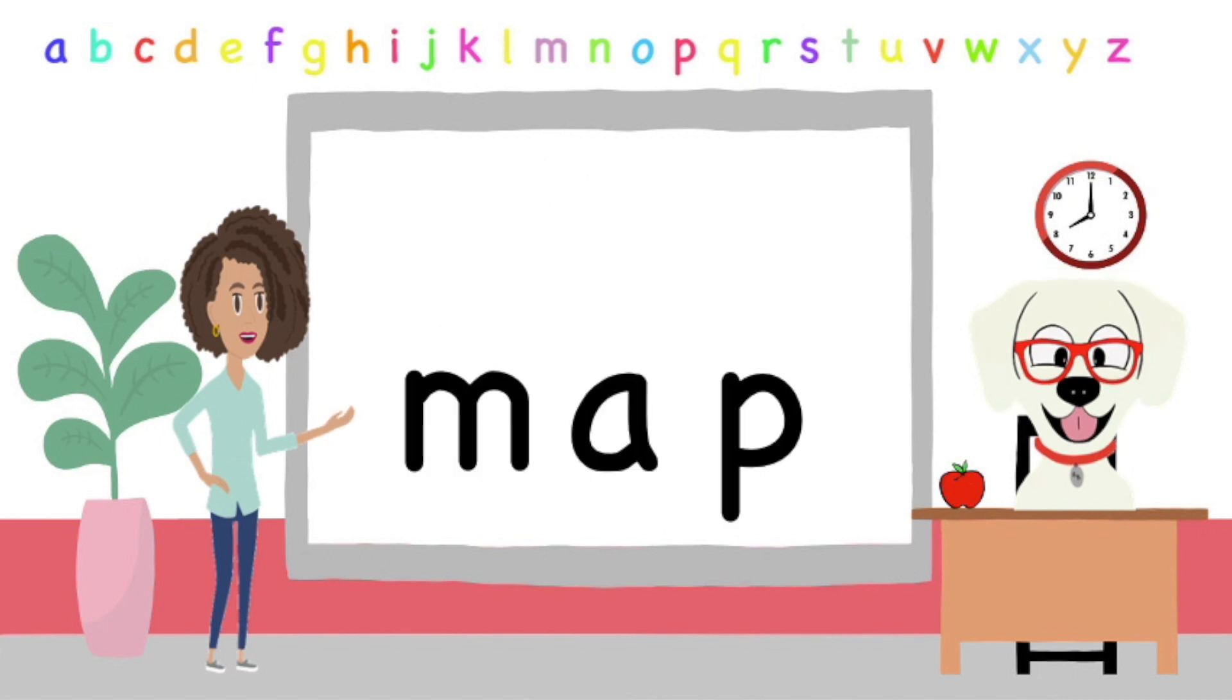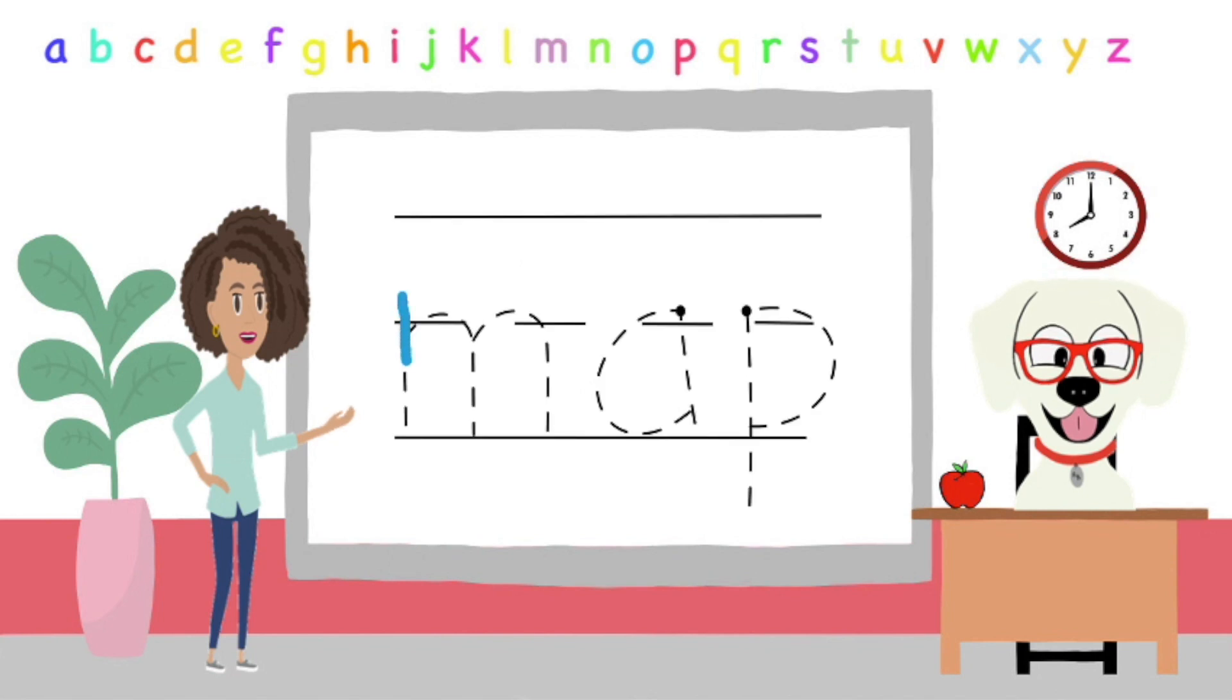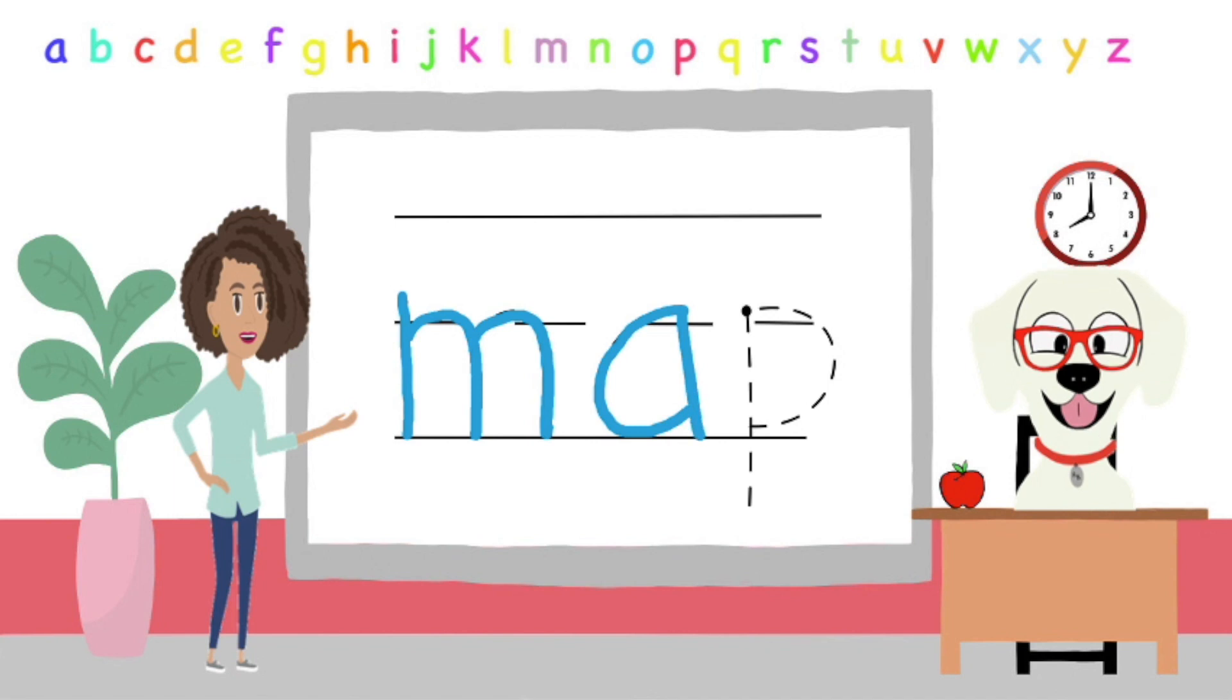For our next lesson, we are going to take the sounds we learned and blend them together to read words. Starting with M, A, P, M, A, P. Can you say M, A, P? Does anyone know what word this spells? Correct! M, A, P says MAP. Now let's write the word MAP. M, A, P. MAP. MAP. Great job!